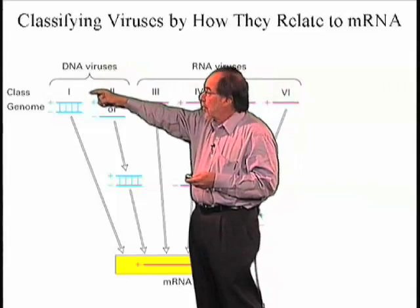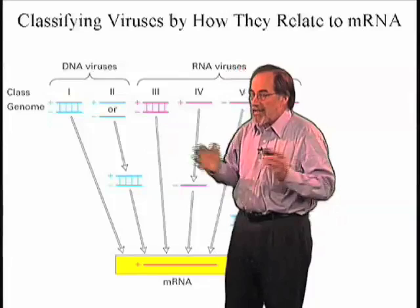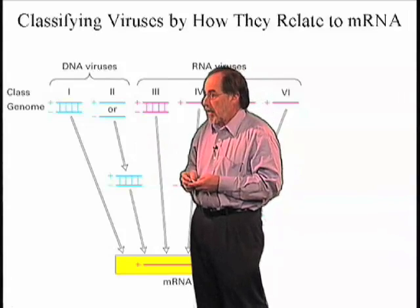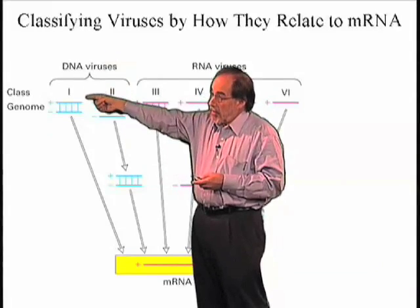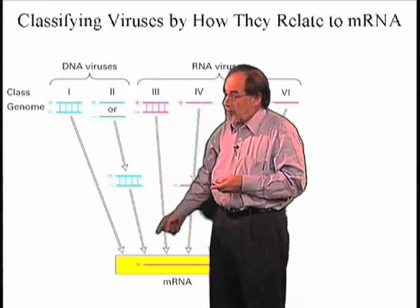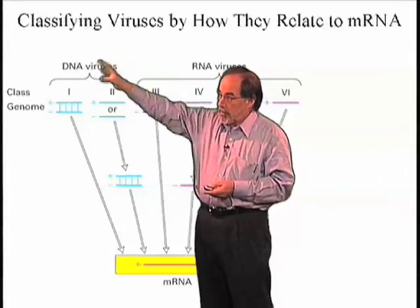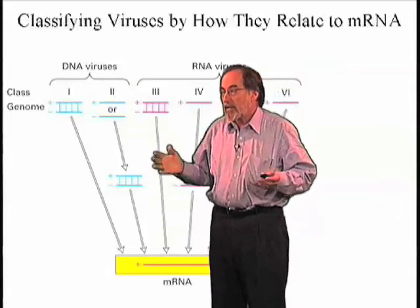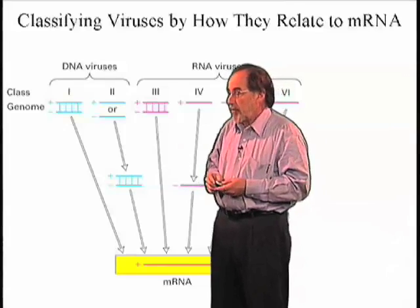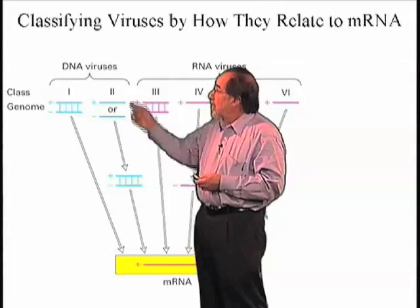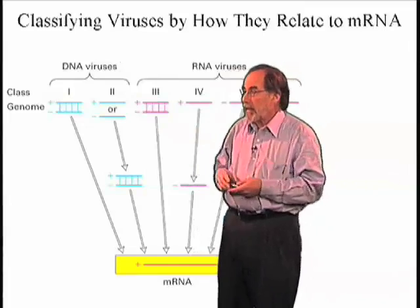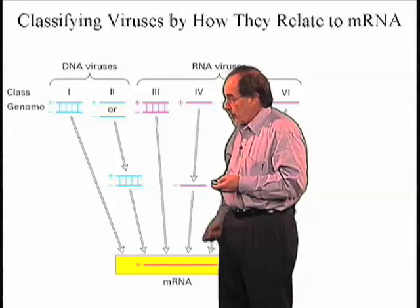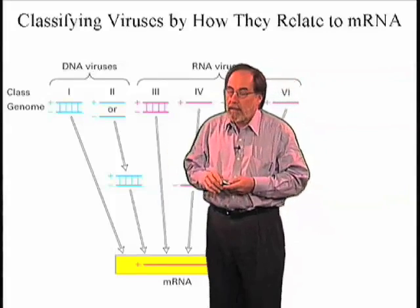The DNA viruses come in two kinds. One kind has double-stranded DNA — the standard kind of DNA that we find in the nucleus of all of our own cells and the cells of other organisms in our environment. For that double-stranded DNA to make messenger RNA is pretty straightforward. There's a copying mechanism called DNA-dependent RNA polymerase that copies DNA into RNA, and viruses either hijack the cell's DNA-dependent RNA polymerase or they bring in their own. Then there are some viruses that have only one strand of DNA. Those viruses have to duplicate that strand to make a double strand, then that can be transcribed into message, so they have a somewhat more complicated life cycle.